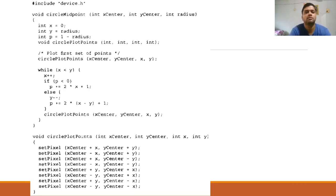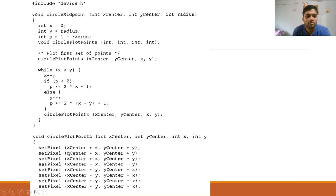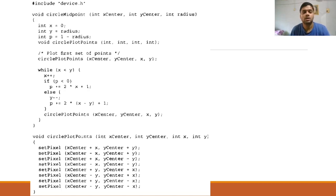Looking at the program logic: x=0, y=radius, initial decision parameter p = 1 - radius. The first point is plotted, then the while loop runs while x < y. Inside the loop, x is incremented; if p < 0, the decision parameter is updated as p = p + 2x + 1; else y is decremented and p = p + 2x - 2y + 1. The pixel function plots points in all eight octants simultaneously.